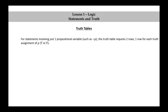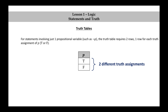For statements involving just one propositional variable, such as not P, the truth table requires two rows — one row for each truth assignment of P: true or false. Notice how for P there are just two different truth assignments. As an example, we have the negation.